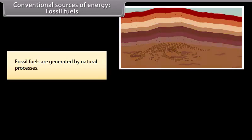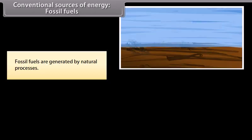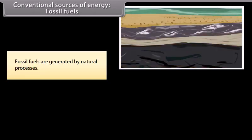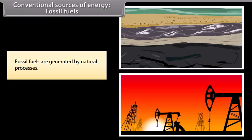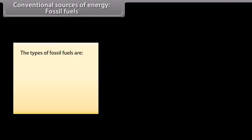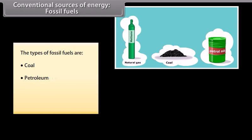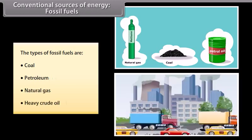Conventional sources of energy: Fossil fuels. Fossil fuels are generated by natural processes and include a high percentage of carbon. These are non-renewable sources of energy, as they take millions of years to form. The reserves of these fuels are reducing at an alarming rate. The types of fossil fuels are coal, petroleum, natural gas, and heavy crude oil.